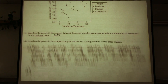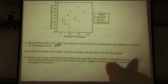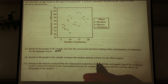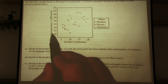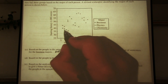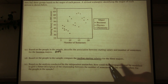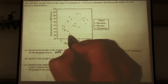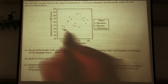Part D: compare the median starting salaries for each of the three majors. The median is found by ordering data from least to greatest. For business majors, there are eight people, so the median is between the fourth and fifth values. Ordering from least to greatest — first, second, third, fourth, fifth — the median falls between those two dots, so approximately 37.5 thousand euros.